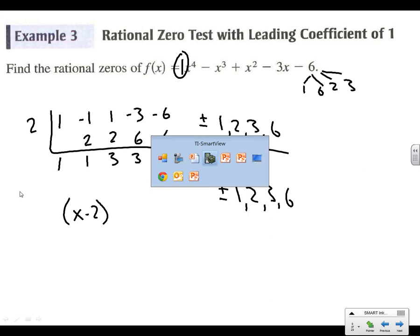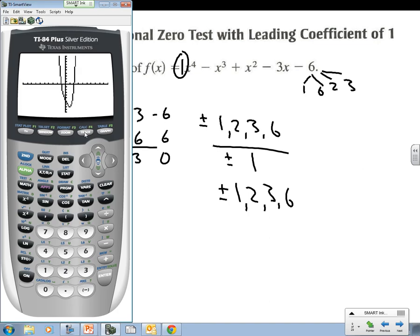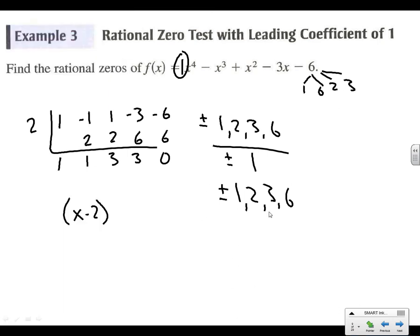Let's go back to the graph and see about the other crossing. Using trace, it looks like it's about negative 1 — not landing on it exactly, but best guess is about negative 1, which is on my list. So let's try negative 1 with synthetic division on what's left over: 1, 1, 3, and 3. Running through — it comes out. So negative 1 is another zero.